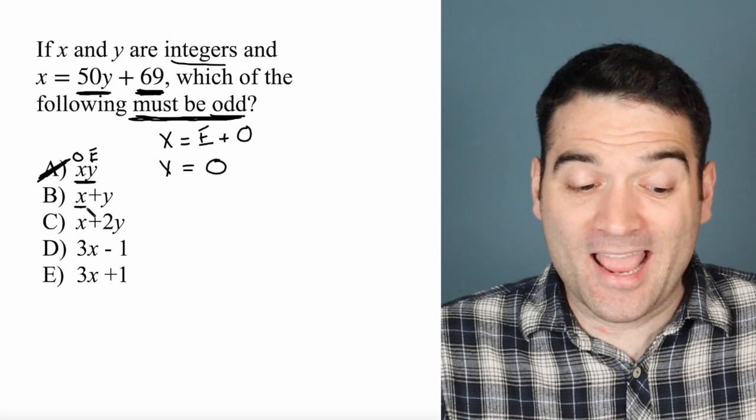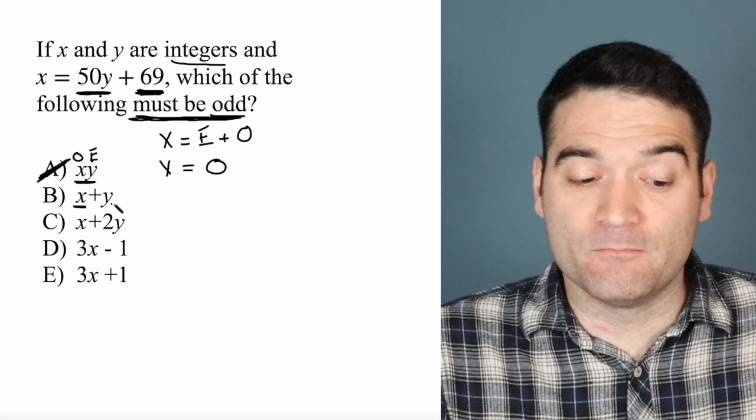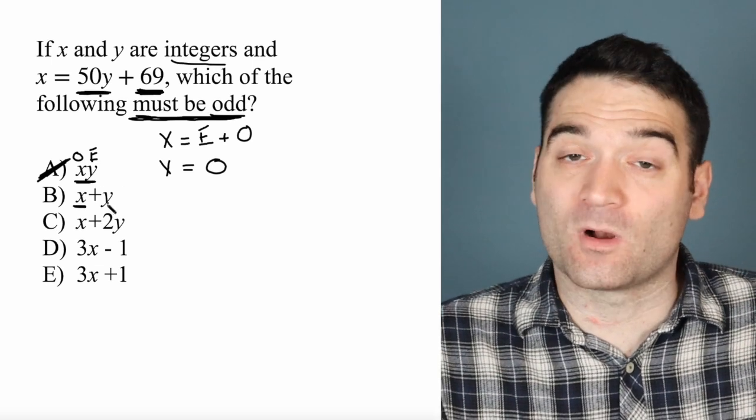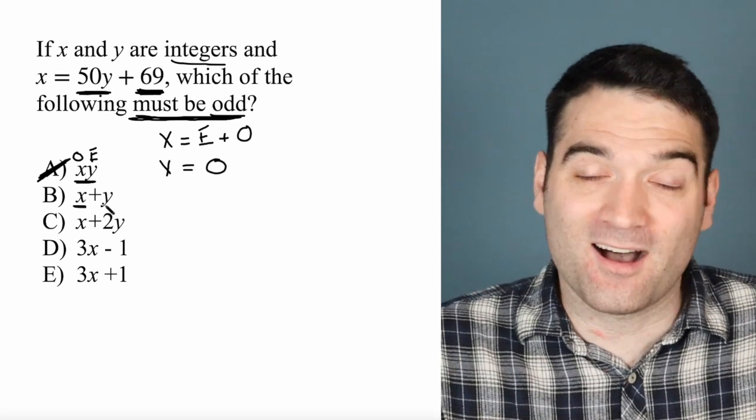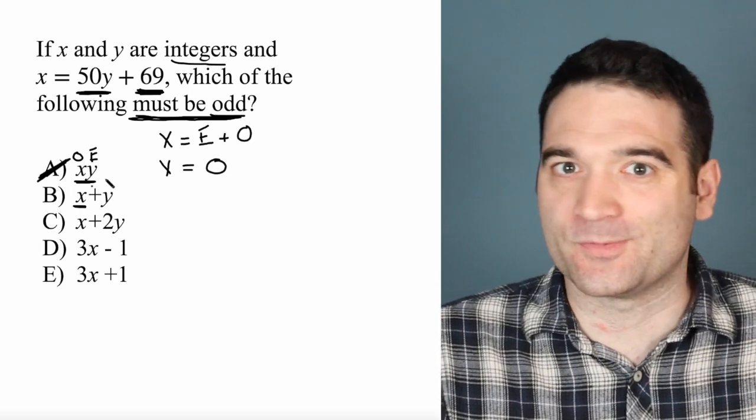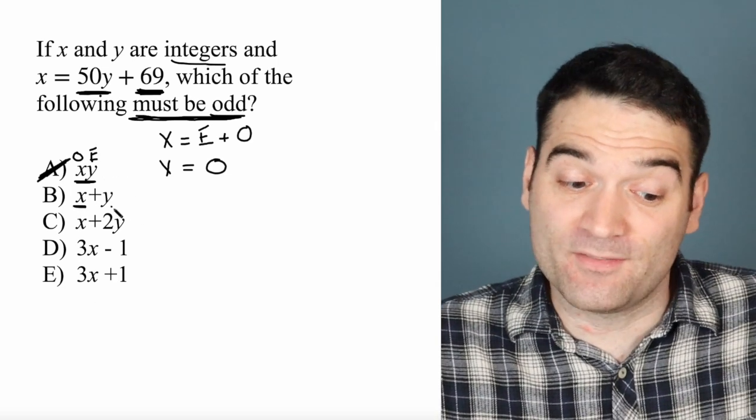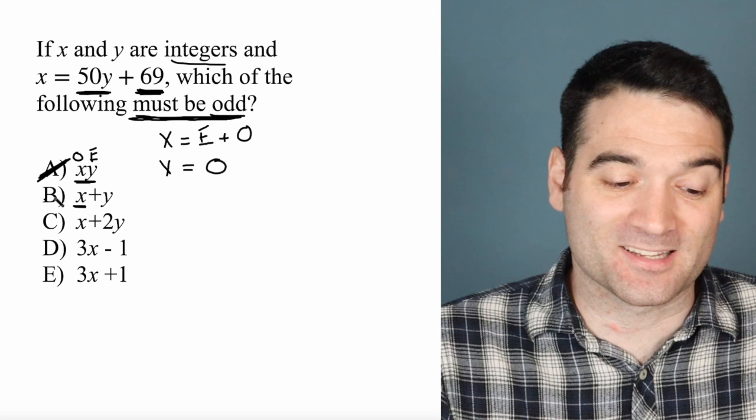Okay, well, x is an odd number, but we don't know what y is. Y could be even or odd. So an odd plus an odd is an even. 3 plus 3 is 6. But an odd plus an even is an odd. So that doesn't have to be true.